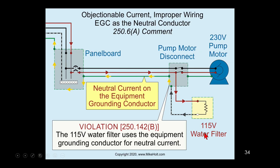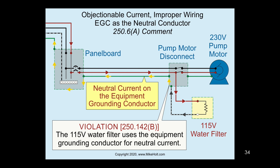Here is a 230-volt pump motor and somebody wants to add a 115-volt filter. They ran two hots and an equipment grounding conductor out to the motor disconnect, or maybe even putting in a receptacle. Somebody wants to put a receptacle out there — they've got two hots and an equipment grounding conductor, so they connect one hot and use the equipment grounding conductor as a neutral, letting electrons travel back to the source. That means you're using that equipment grounding conductor to carry neutral current.